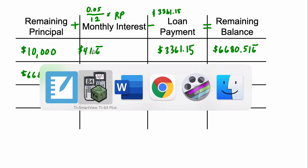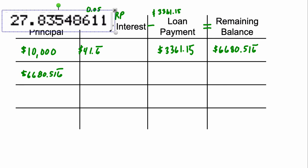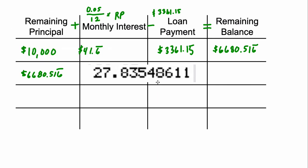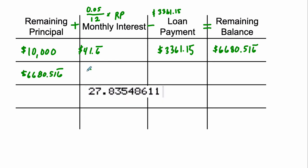And then we repeat the process. Notice we're not rounding at all. So we have this number, and then we multiply that remaining principal by 0.05 divided by 12. And now we're getting a really unfriendly decimal. So the interest is going down. The interest was $41. Now it's about $27.835486111.